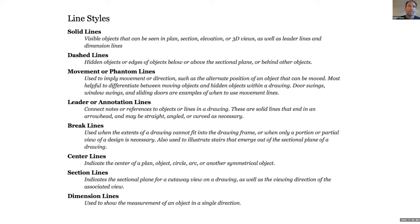These are all the different line styles we have: solid lines and dashed lines. Dashed lines are usually for something that's hidden or above the plane of the drawing. So in a plan, upper cabinets would be dashed lines because they're above where we cut the plan. A roof overhang might also be a dashed line — they're all designed to indicate something hidden or occluded.